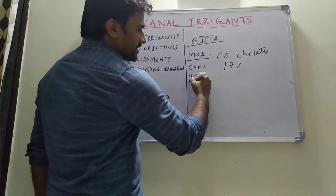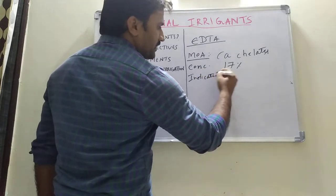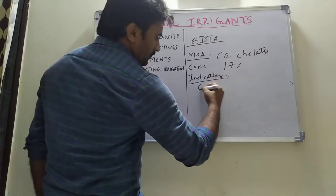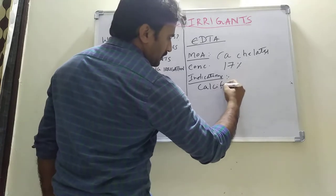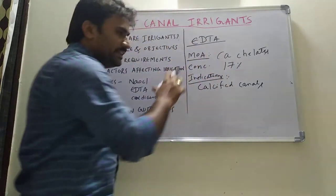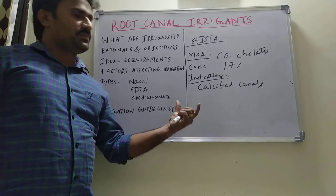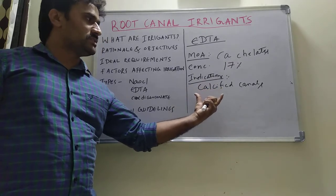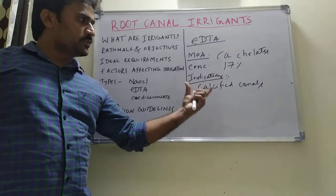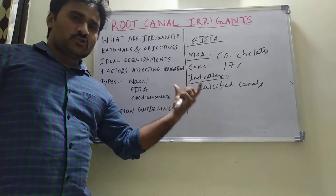EDTA can be routinely used as an irrigating agent, but its special indication includes calcified canals — especially in elderly patients. Using EDTA irrigation in calcified canals helps achieve canal patency by making the dentine softer for easier instrumentation. This is the main indication of EDTA.